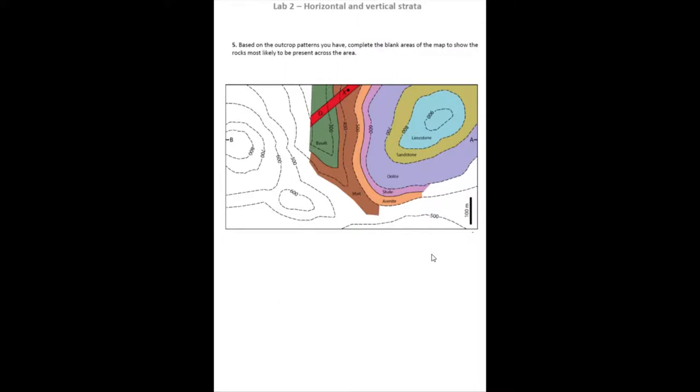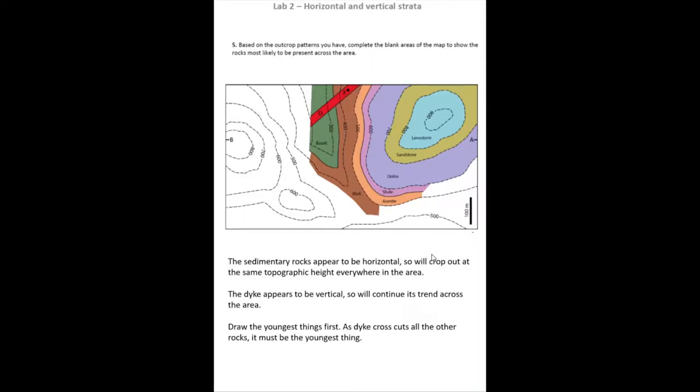The next question says that based on the outcrop patterns you have, complete the blank areas of the map to show the rocks most likely to be present across the area. Well, we've already worked out that the sedimentary rocks appear to be horizontal. And so if they're horizontal across the area, which is an assumption that we're going to make, those contacts and those rocks should crop out at the same topographic heights everywhere.